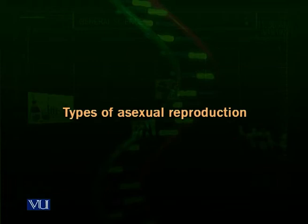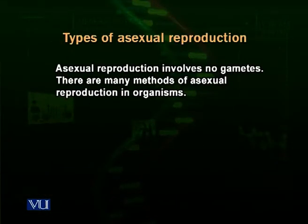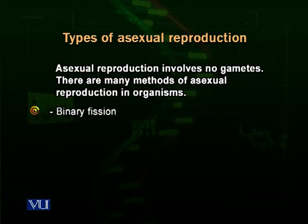First we talk about asexual reproduction. There are many methods of asexual reproduction but we will talk about the most important ones. Asexual reproduction involves no gametes because the offspring will be produced by simple cell division or mitosis in a single organism. There are many methods of asexual reproduction. Binary fission is a very common method, particularly in prokaryotes and in unicellular organisms.